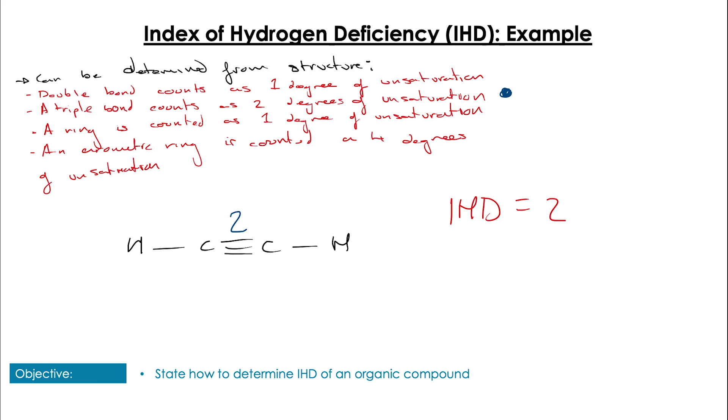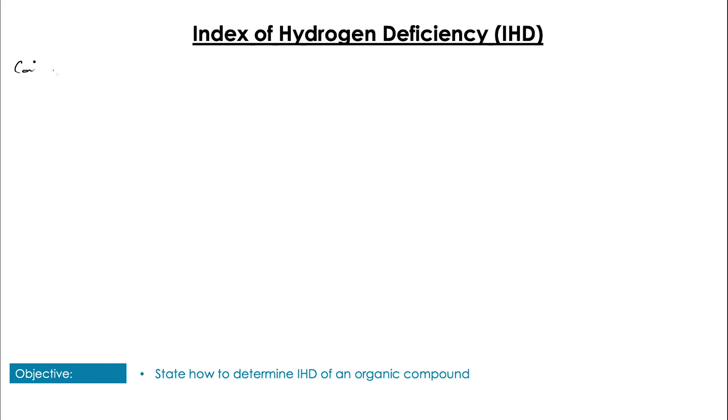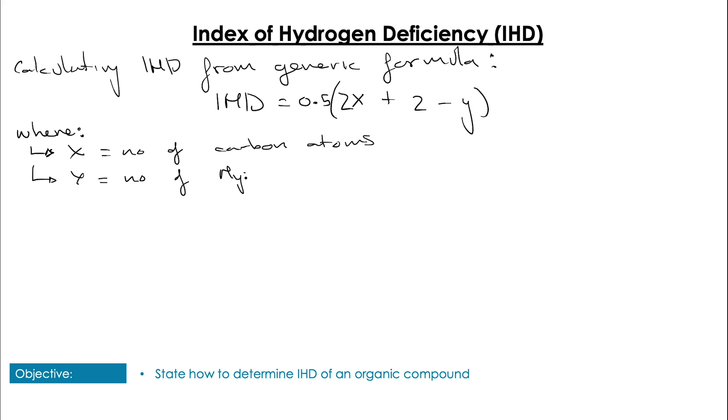However, we can also calculate the IHD without actually knowing the structure of the molecule, which if you think about it is going to be a lot more useful, because if we know the structure of the molecule then it may not be as interesting for us to try and find this as we can see it from the structure. So there is a generic formula that we can follow, where x is the number of carbons and where y is the number of hydrogens that are present in the molecule. So we do of course need to know the molecular formula of the molecule.